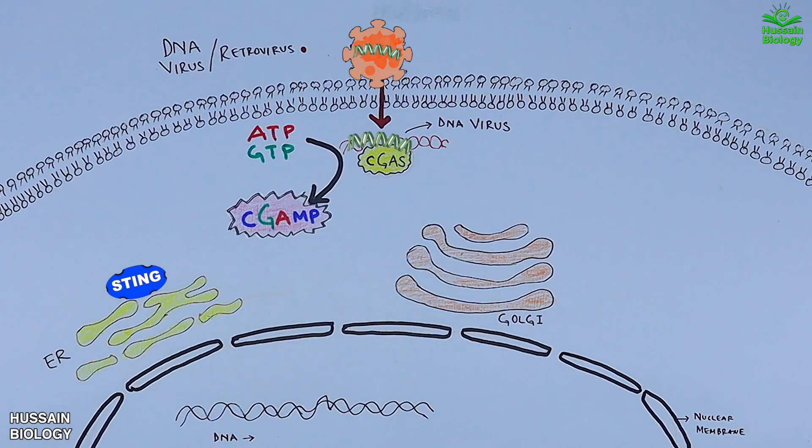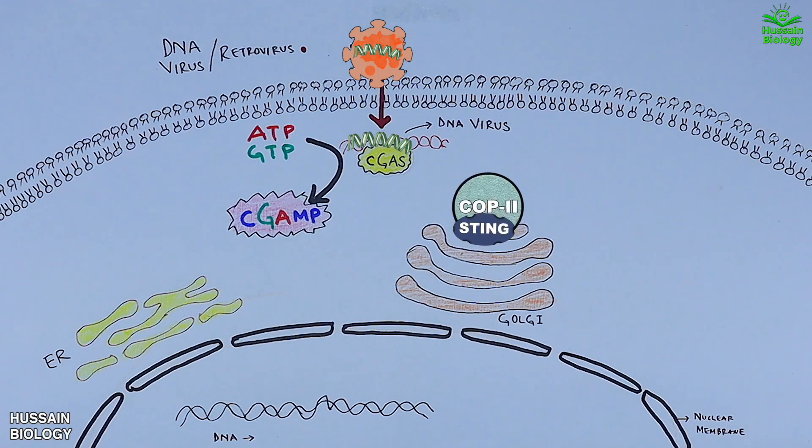The secondary messenger cGAMP goes to the endoplasmic reticulum where it activates the STING molecule. Upon activation, this STING molecule translocates from endoplasmic reticulum to Golgi with COP2 vesicles shown in the animation.